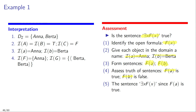Why is that? A refers to Anna and Anna is in the extension of the predicate F, so FA is true. B refers to Burda and Burda is not in the extension of the predicate F, so FB is false. The sentence 'there is an x which is F' is true since FA is true.